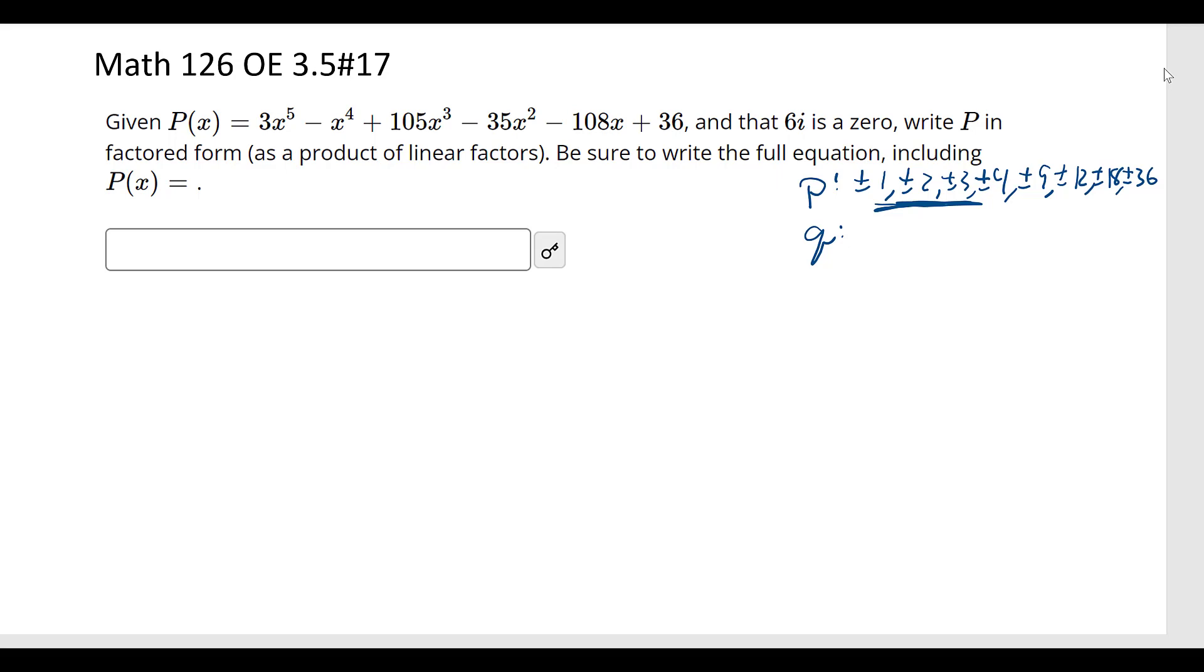If we look at Q's, we're looking at plus or minus 1, plus or minus 3. So our P over Q's are going to be plus or minus, I'm going to go with the ones that are more realistic: 1, 2, 3, 4.